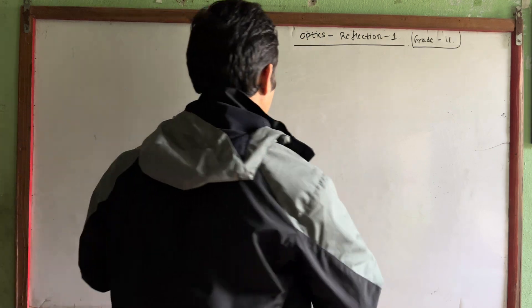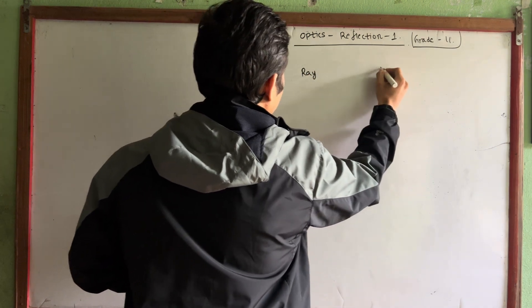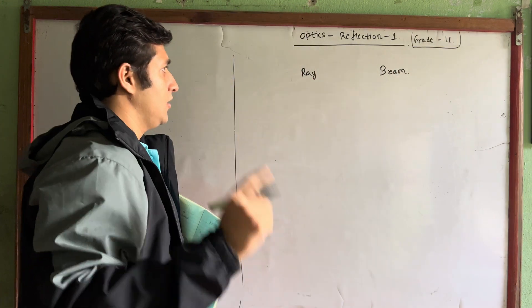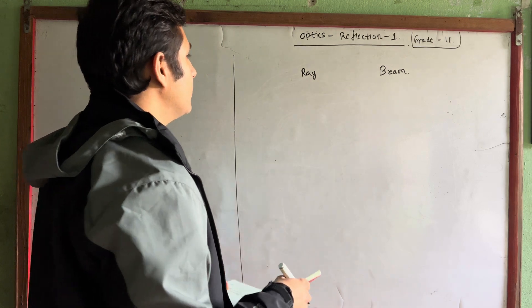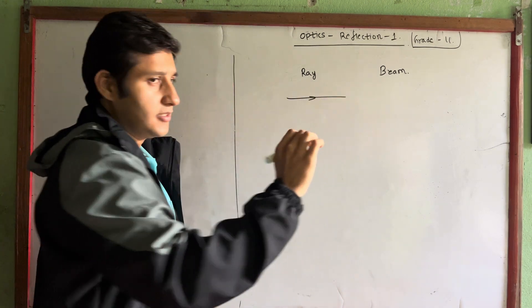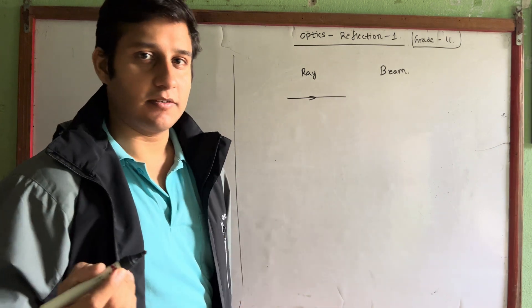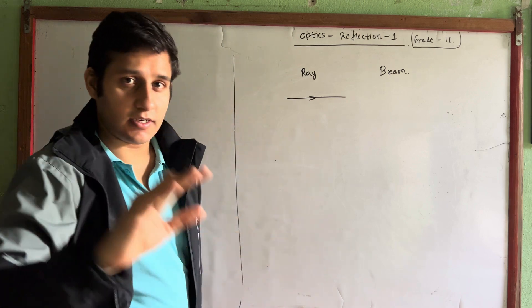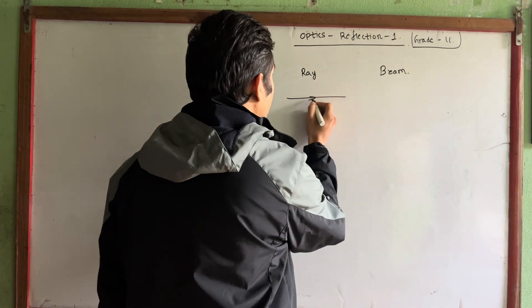Let's start. First question: what do you think? This is ray and beam. What does ray mean? A ray is a single line of light. This is a ray.